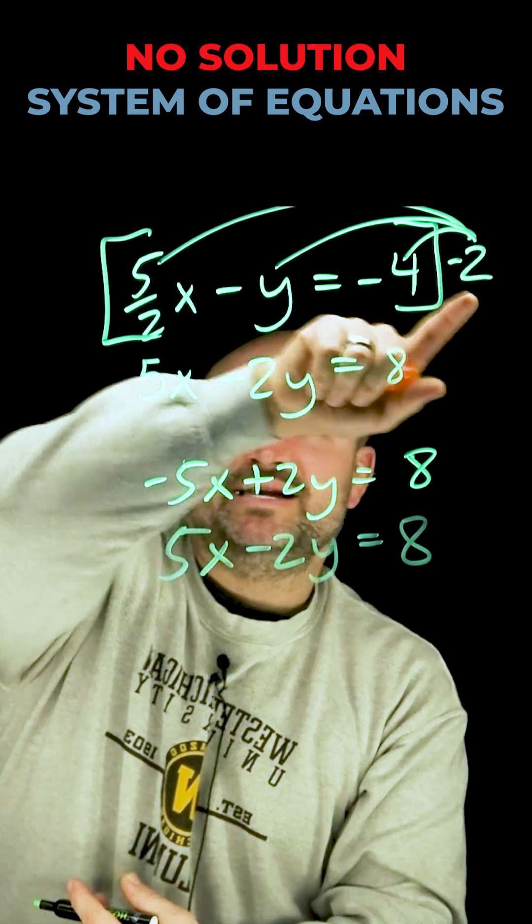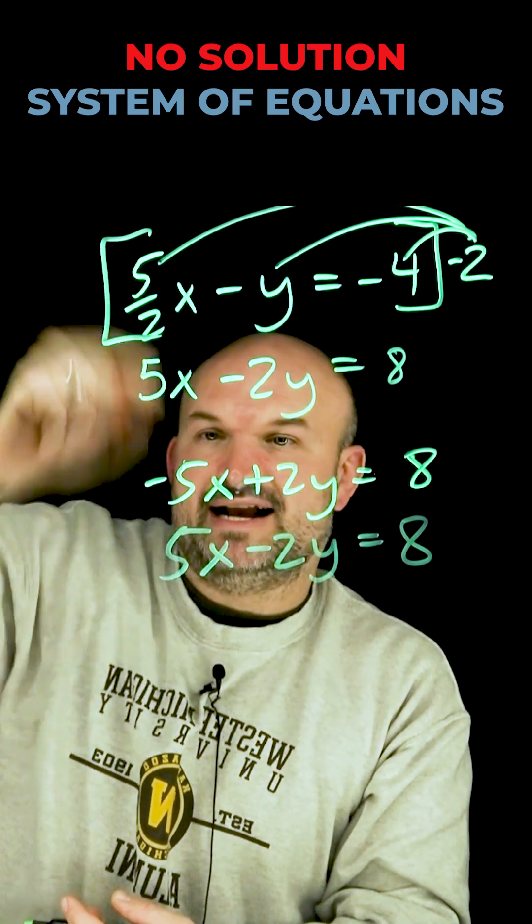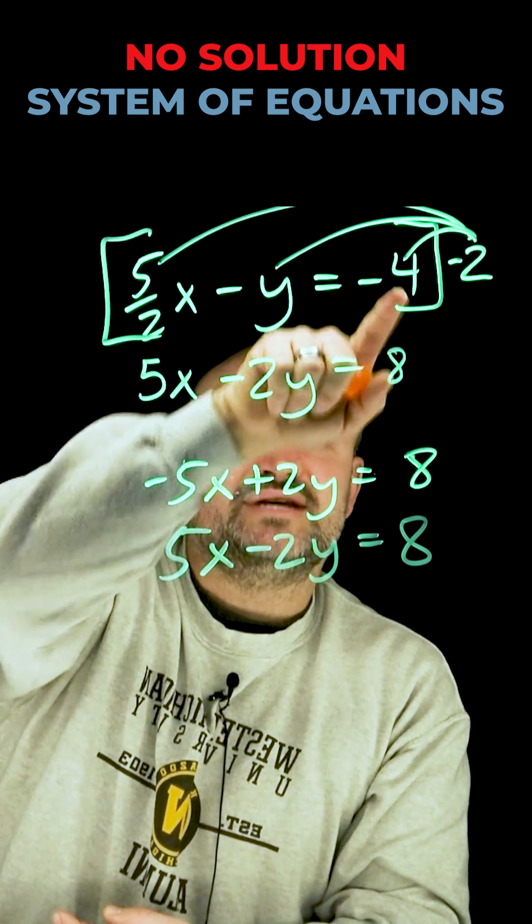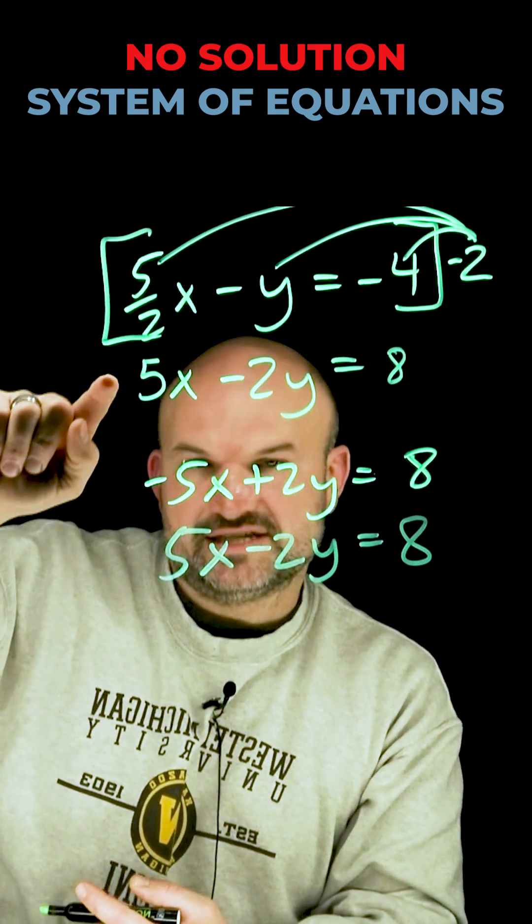Okay, so make sure when I multiply the negative 2 times 5 halves, the 2 is divided out. That's why I'm left with a negative 5x. Negative 2 times negative 1 is a positive 2. Negative 2 times negative 4 is 8, and you can see this is preserved.